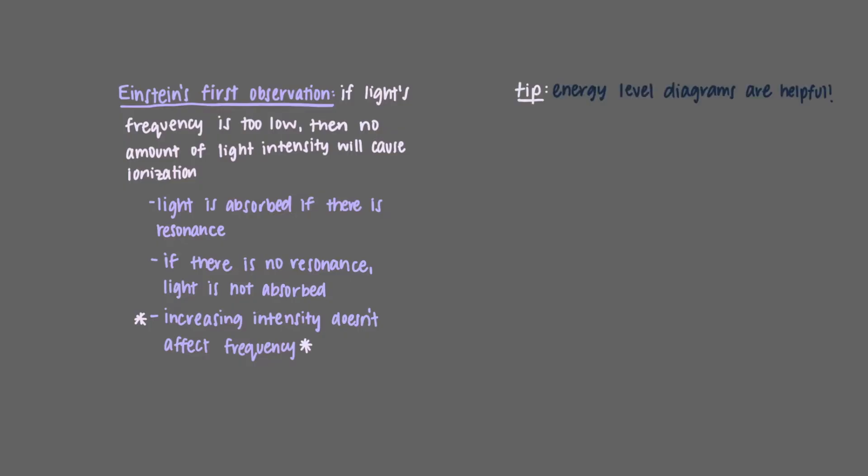As we've seen, we can use energy diagrams to help us understand the absorption of light by electrons. Consider this diagram for the highest energy electron in a metal. The vertical arrows represent lights of different frequencies.